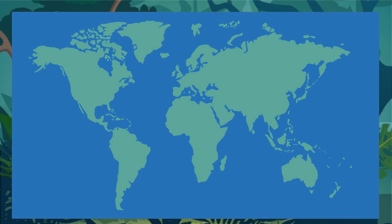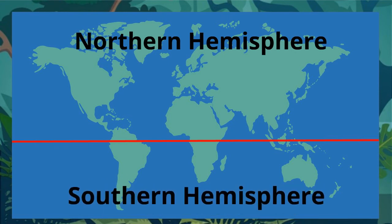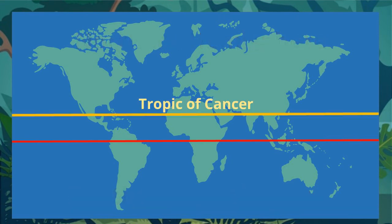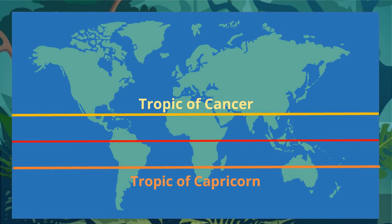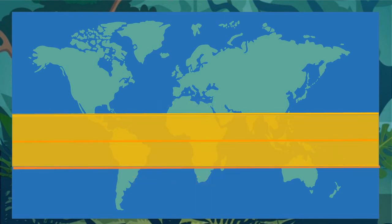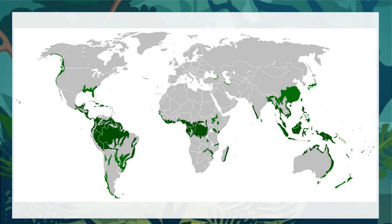We know that the Earth is kind of a wonky ball shape. Going around the middle of this wonky ball is an imaginary line called the equator. This splits the world into northern and southern hemispheres, exactly in half. Just above the equator is another imaginary line called the Tropic of Cancer, and below the equator there is another imaginary line called the Tropic of Capricorn. Nearly all of the world's rainforests are found between the two tropics — that's why they're called tropical rainforests. Take a look at this map; it shows you all the places you can find the tropical rainforests of the world.